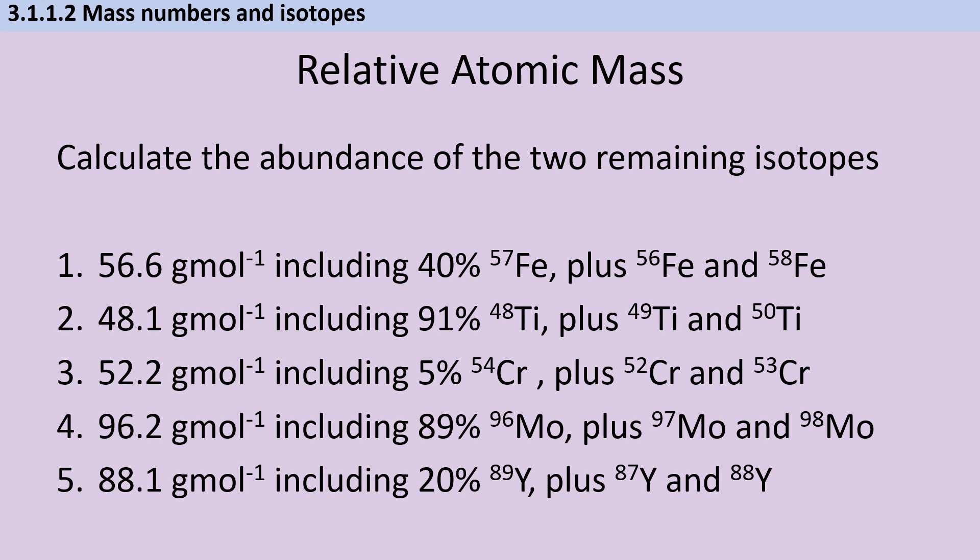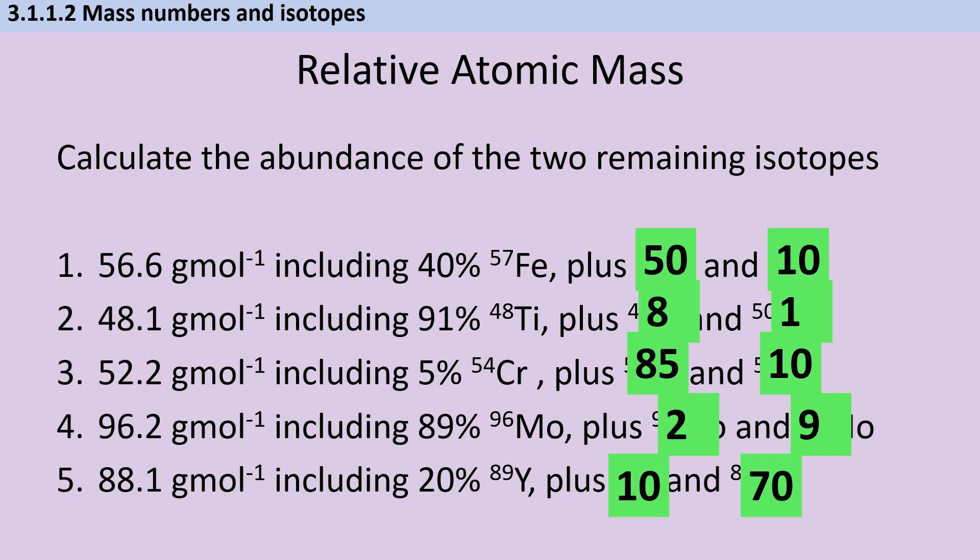So pause the video and see how you get on. For this first question, we've got 50% of iron-56 and 10% of iron-58. Then titanium-49 is making up 8% and titanium-50 is making up 1%. Then for chromium, we've got 85 and 10. For molybdenum, we've got 2 and 9. And for yttrium, we've got 10 and 70%.